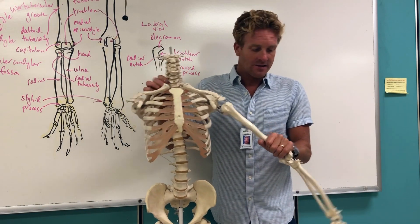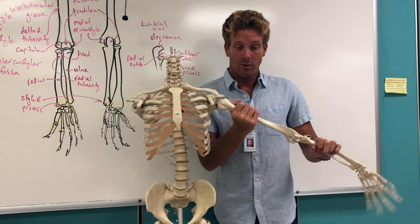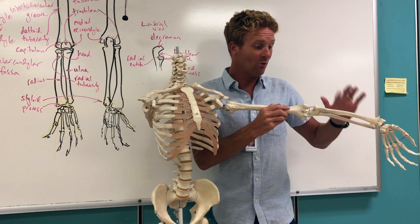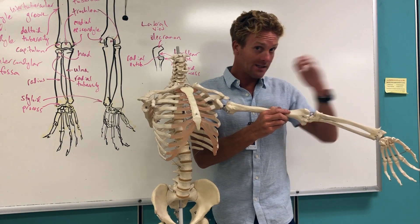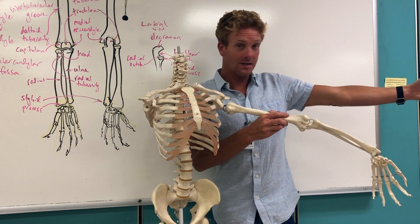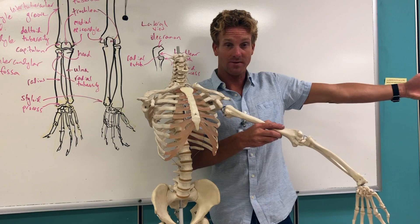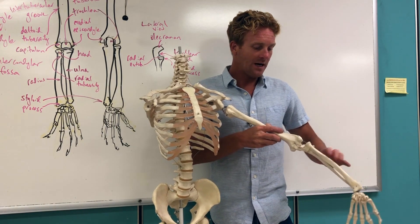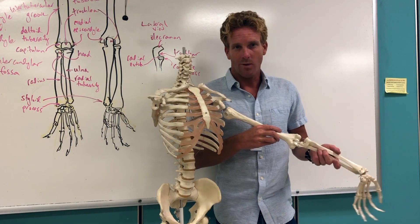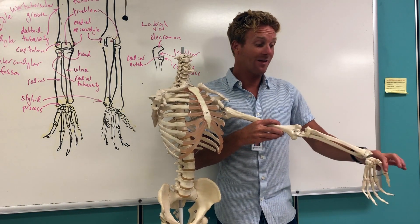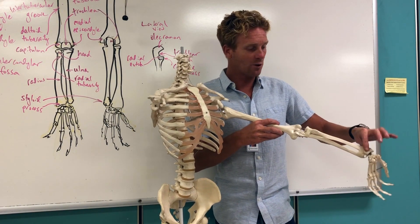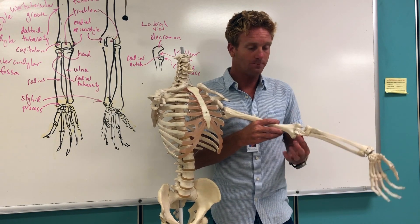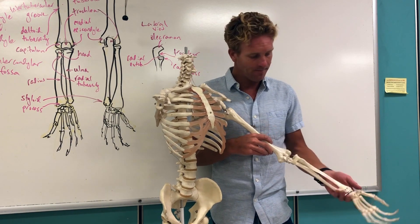That leads us to the upper arm. The humerus is the bone of the upper arm. The forearm is composed of two different bones: the radius and the ulna. The anatomical correct position is palms forward. The radius is on the lateral side, and the ulna is on the medial side. Another way to remember it is the radius connects to the thumb side of the wrist and is larger at the wrist, whereas the ulna is smaller at the wrist, larger at the elbow, and connects on the pinky side.